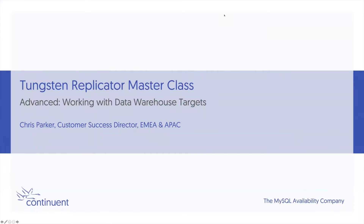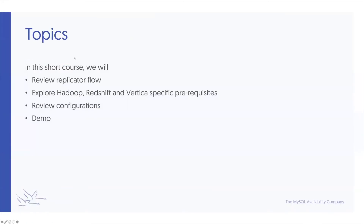Hello and welcome once again to this next Tungsten Replicator Masterclass training session. My name is Chris Parker, Customer Success Director for EMEA and APAC. In today's session we are looking at using the Tungsten Replicator with data warehouse targets — specifically Vertica, Hadoop, and Redshift. We'll do a quick recap of replicator flow with a specific focus on the target side, then look at configuration prerequisites and do a demo.